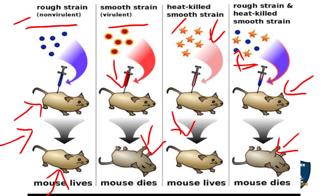The rough strain became the S virulent strain upon mixing. Injected into the mouse, it gained the capacity to kill, and the mouse died. This is the Griffith experiment, conducted in 1928.